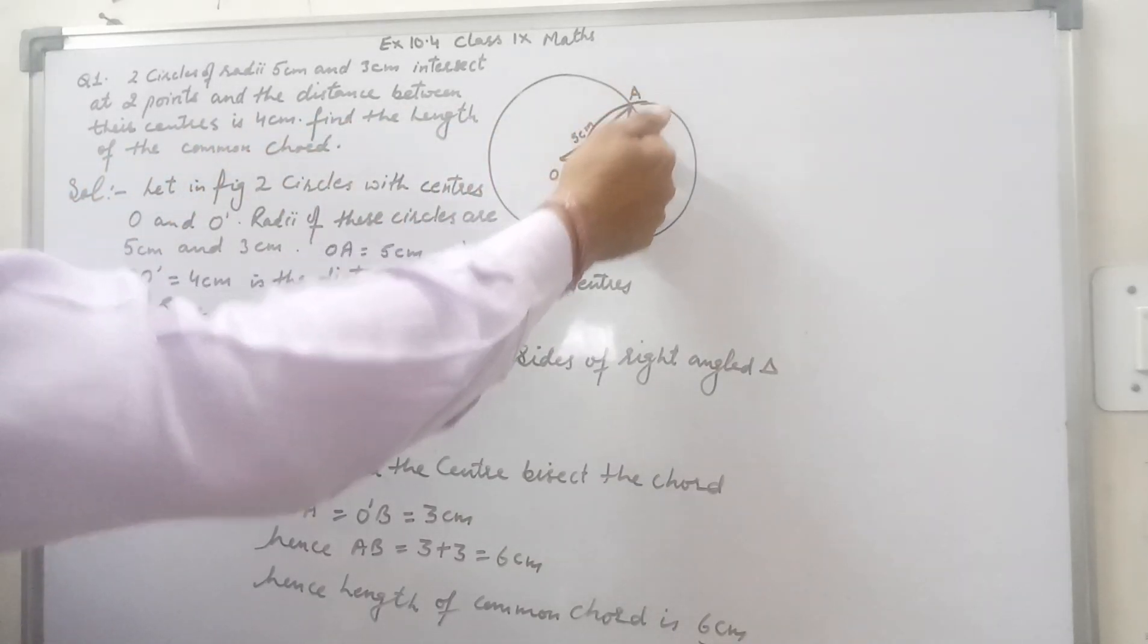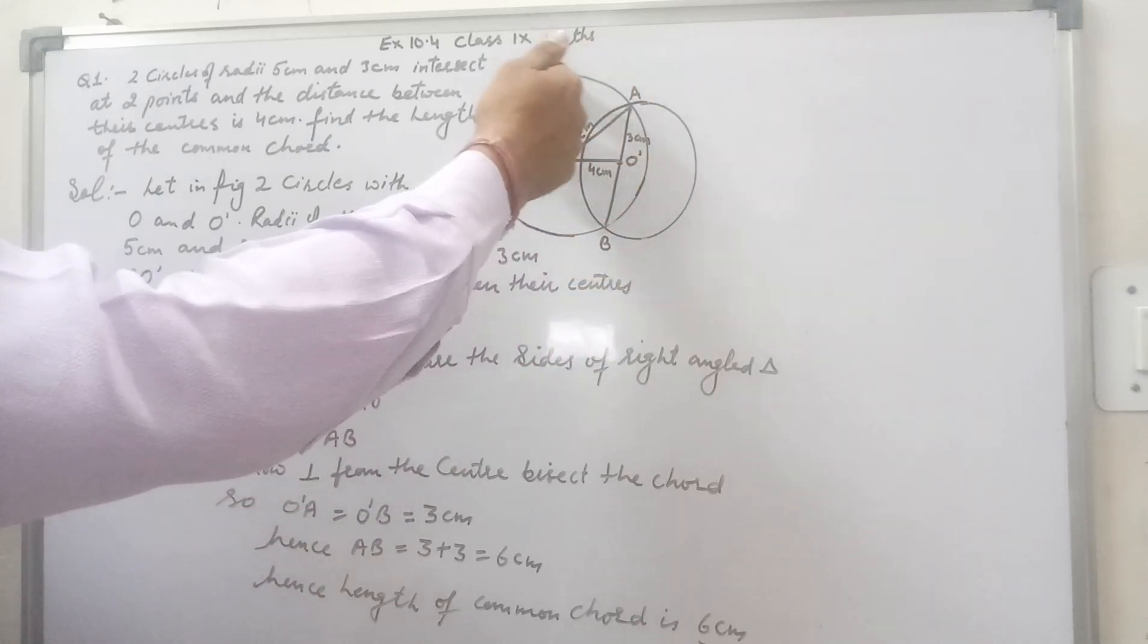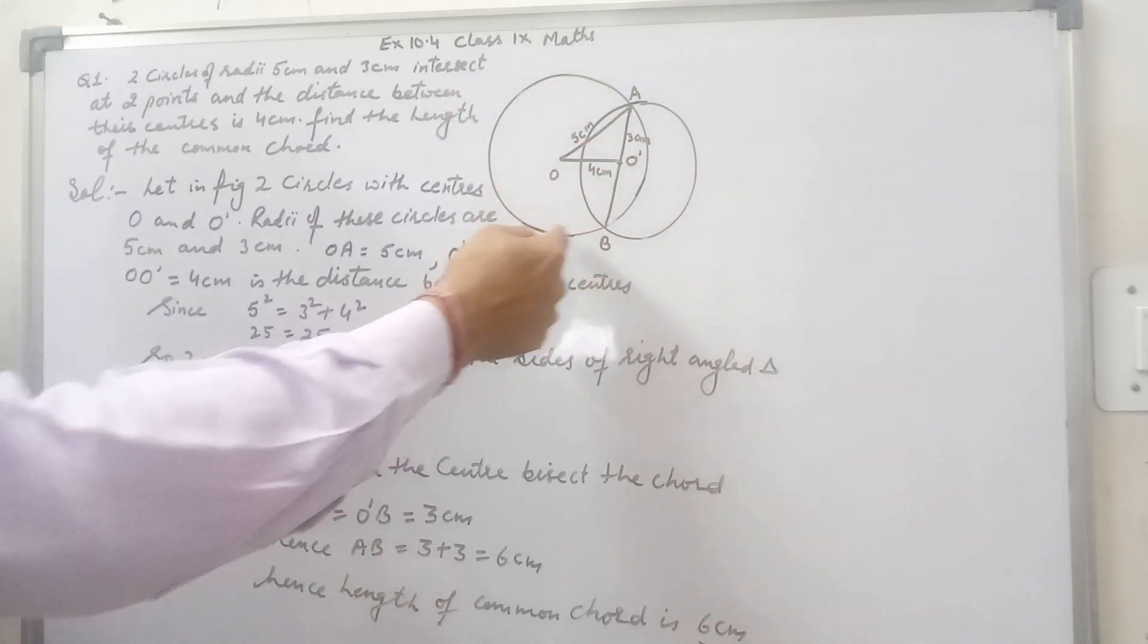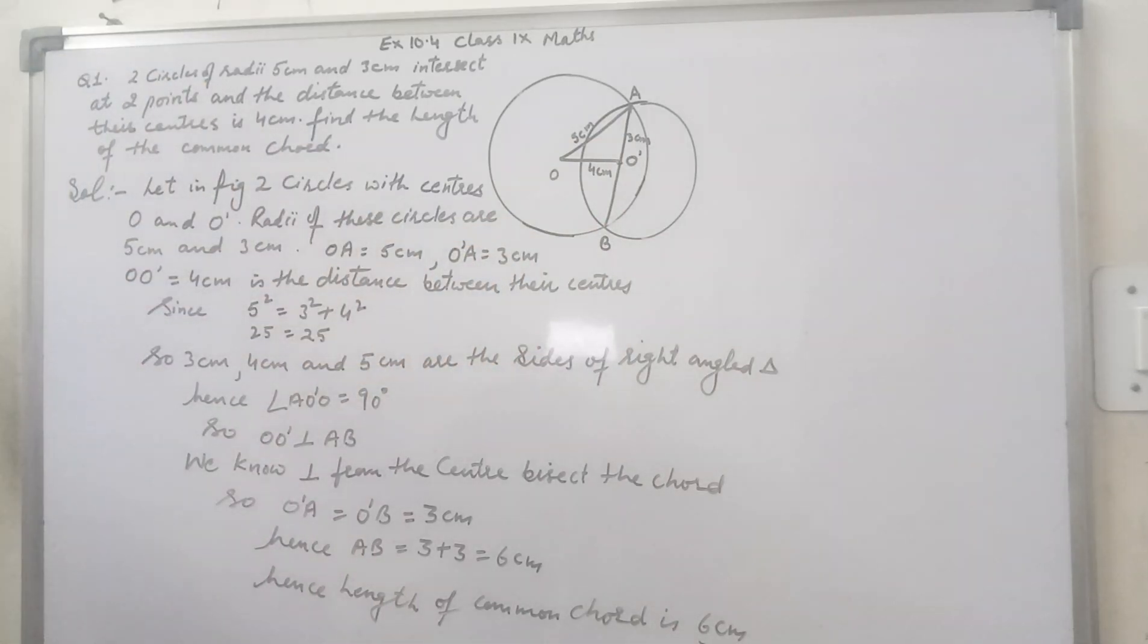We need to find out the length of the common chord. Common chord is this. AB is the chord for both the circles. We need to find out the length of this common chord AB.